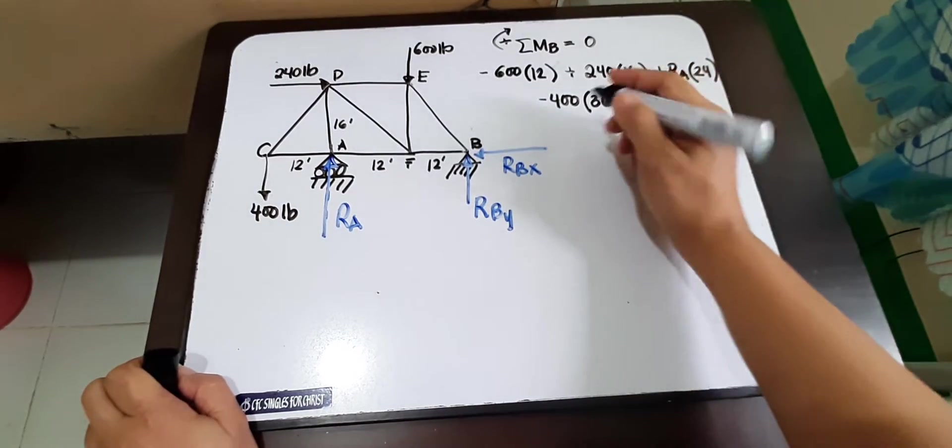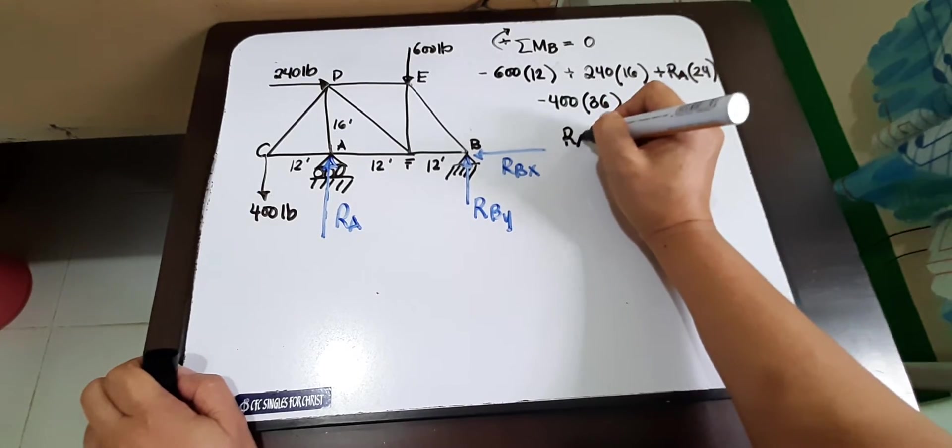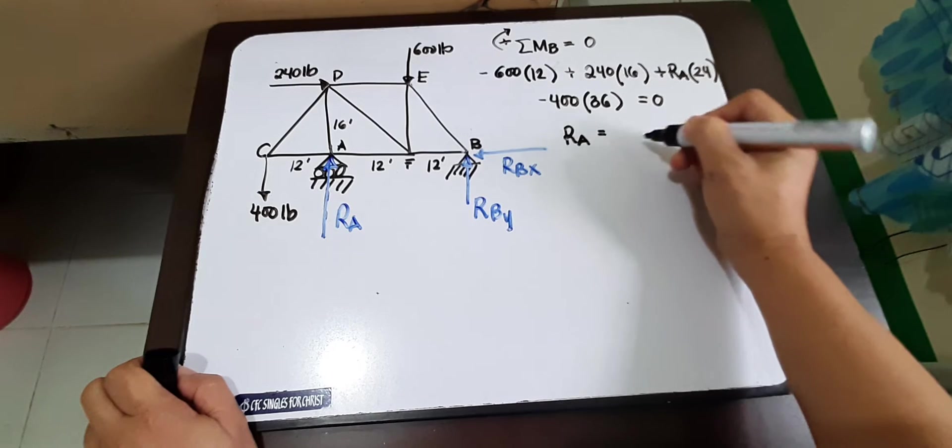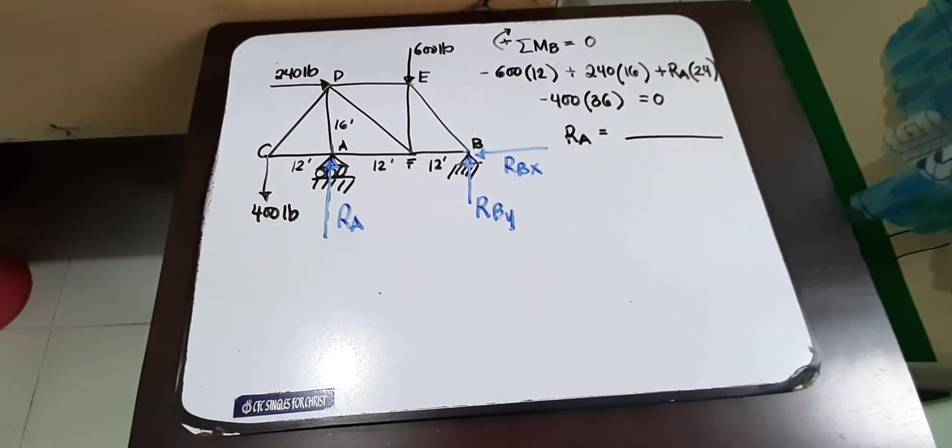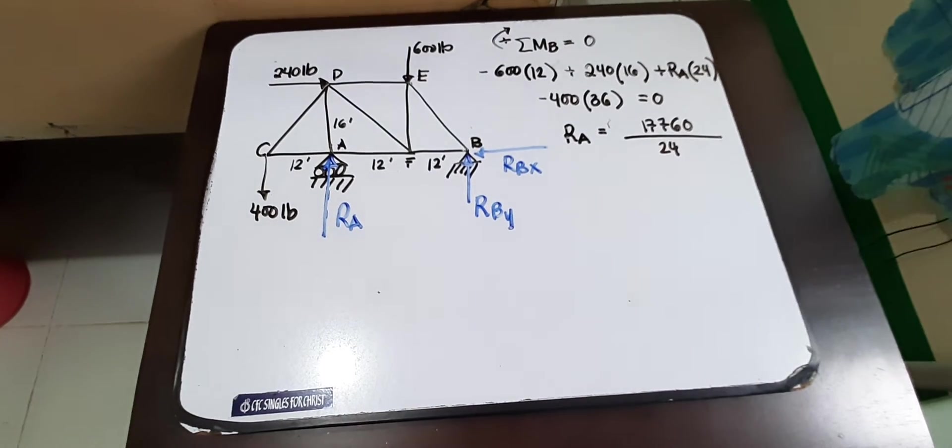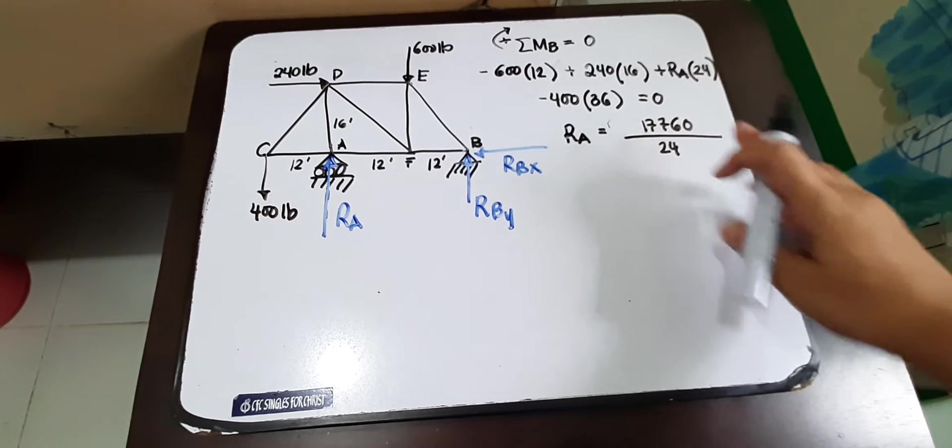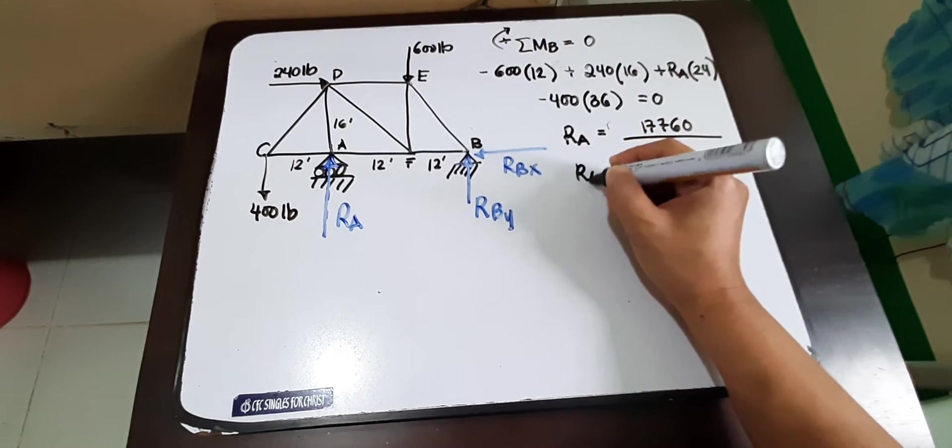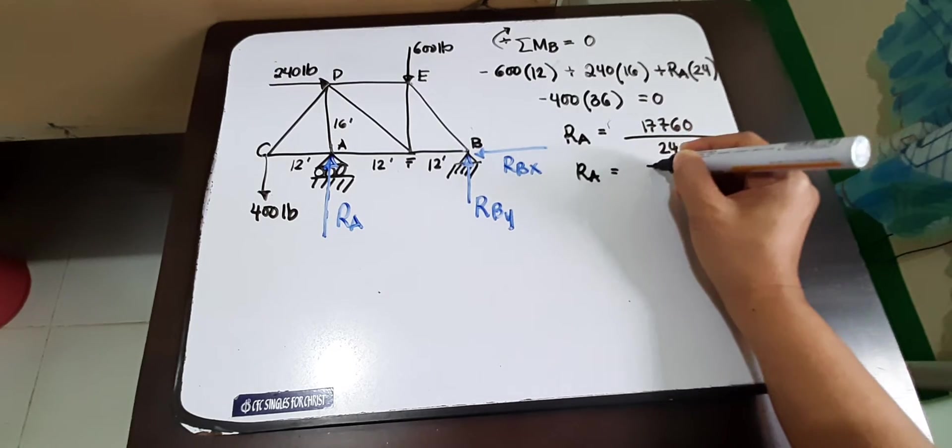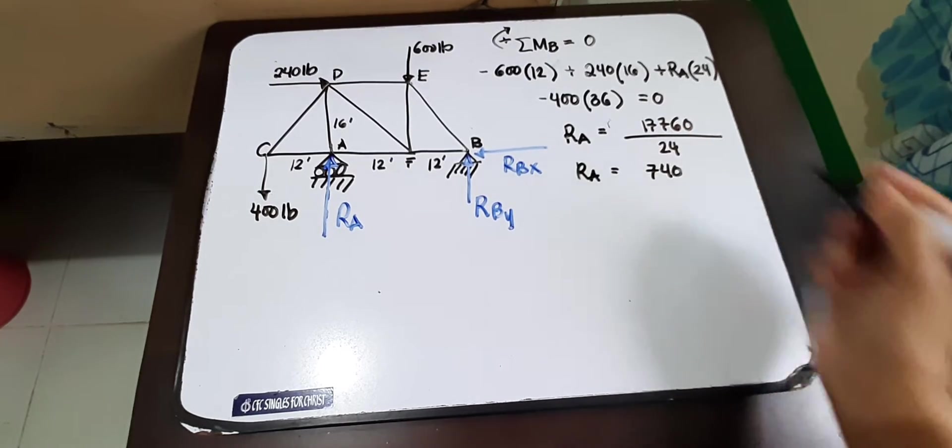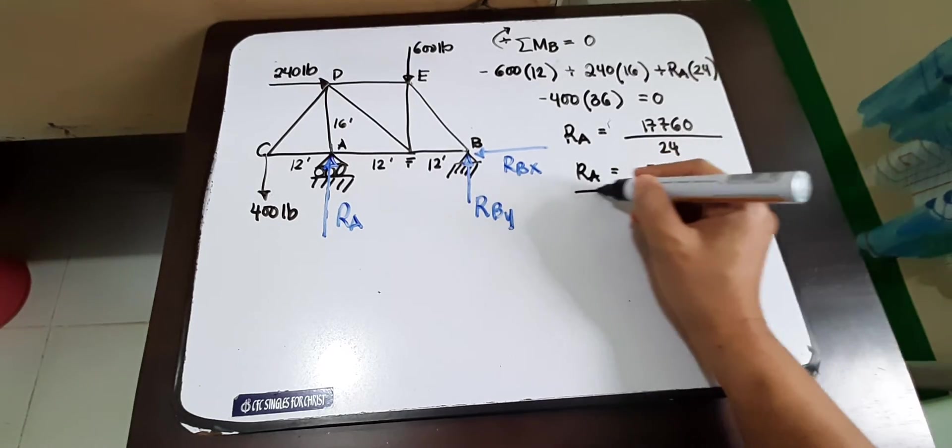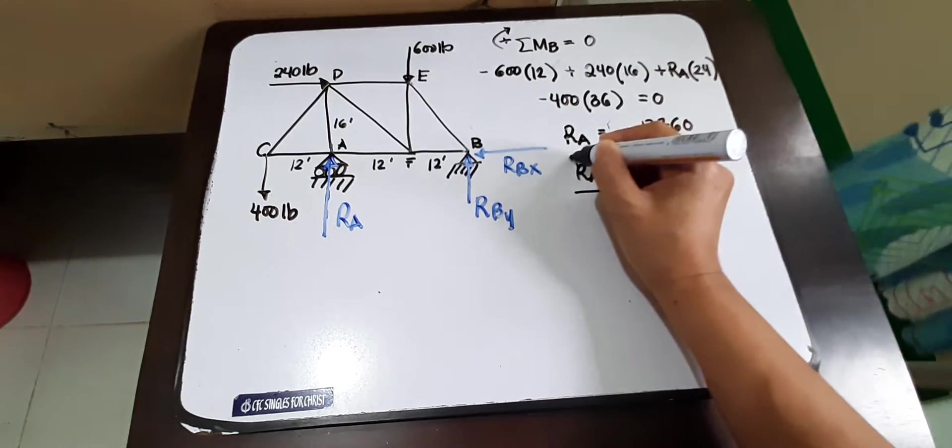And so, manipulating this one, our answer for reaction at A would be... So RA would be 17760 divided by 24, and the reaction at A would be 740 pounds. So this will be our RA.